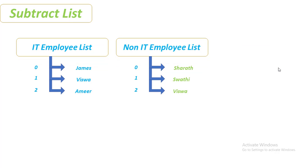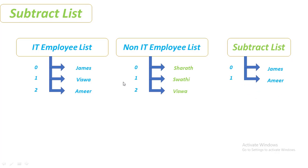Now we'll talk about subtract list. I have the same two lists — IT employee list and non-IT employee list. If I subtract the non-IT employee list from the IT employee list, the common value Vishwa is removed, and we display the remaining values: James and Amir. If subtracting list one from list two instead, we get Serat and Swati, since Vishwa is the common name removed.